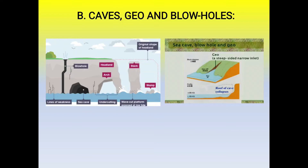Sea caves are formed when the rock bears varied resistance, or when the attack of sea waves is concentrated in one direction only. As a result, the cliffs are cut out into arch-like pockets known as sea caves. Sometimes the hard rocks forming the cliffs bear weaknesses along bedding planes or joints, and wave attack is stronger along such planes or spots.